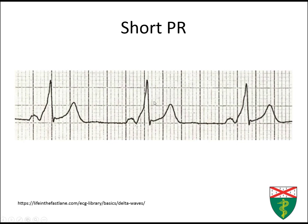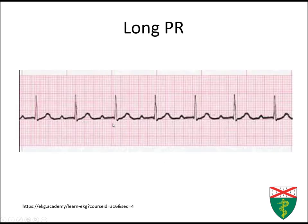Here's an example of a short PR: the P-wave starts and the QRS begins about three little boxes later, so this is less than 120 milliseconds. We can also see a delta wave, classically seen in Wolff-Parkinson-White, showing an accessory pathway that causes ventricular excitation before conduction through the AV node. And here's an example of a long PR — wider than one big box, or five little boxes — so this is a prolonged PR.